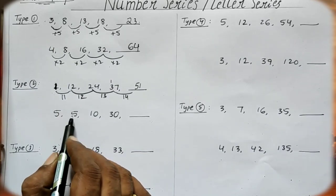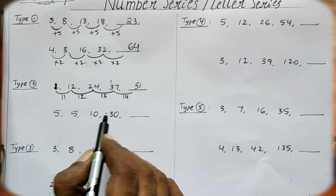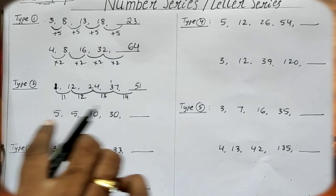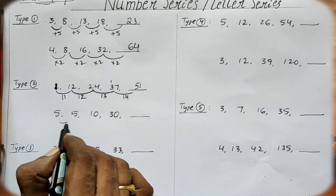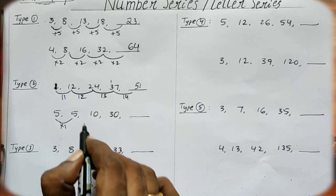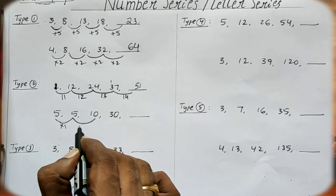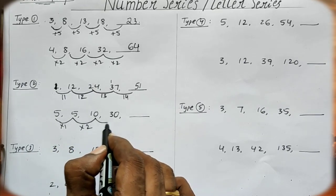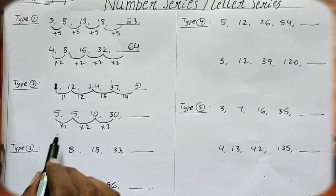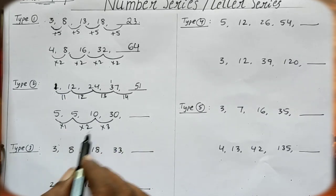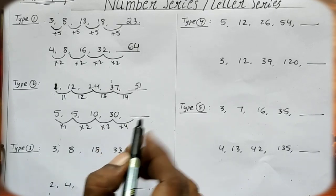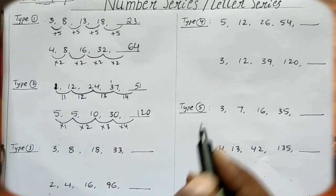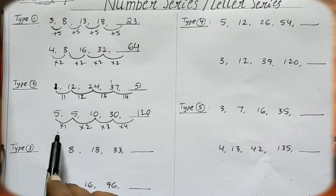Let's take the number 5. If we check multiplication: 5 equals 5, 5 equals 10, and so on. These are not simply in an arithmetic series. Let's take the multiplication table of 5: we use 4, 4, 4, 4, and 4 to find the next numbers in the series.